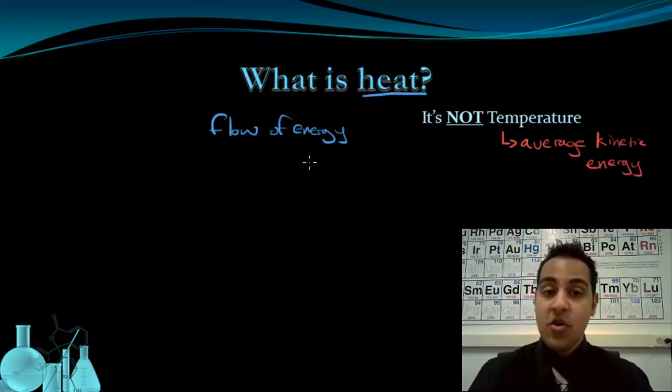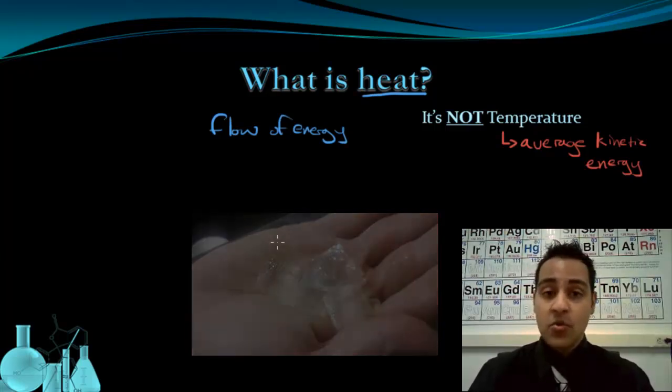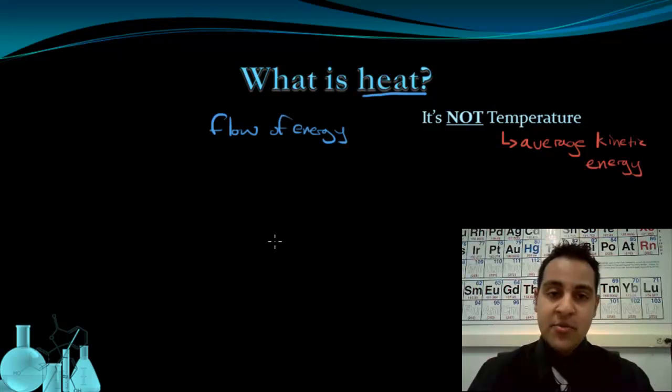So what does it mean to have energy flow from a warmer area to a cooler area? Well, we can illustrate this by thinking about what happens when you hold an ice cube in your hand. If you hold an ice cube in your hand, you know that your hand feels cold. Let's talk about what's going on there with energy.